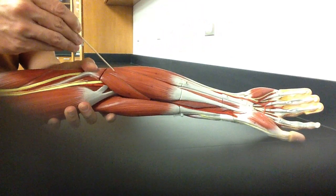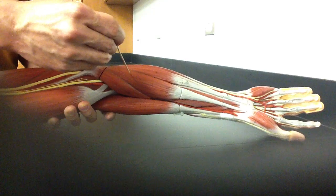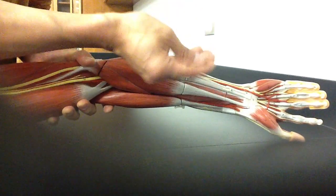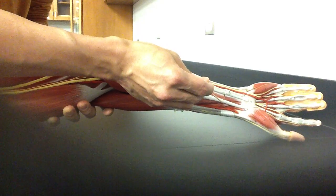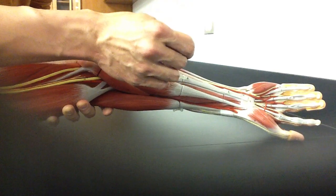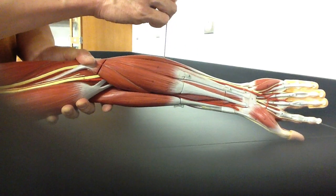And then here's the next one. Palmaris longus is bordered by the flexor carpi radialis. Notice it looks the same, kind of, but on the radial side. Flexes, inserts on a carpal, and on the radial side. So flexor carpi radialis, palmaris longus, flexor carpi ulnaris.